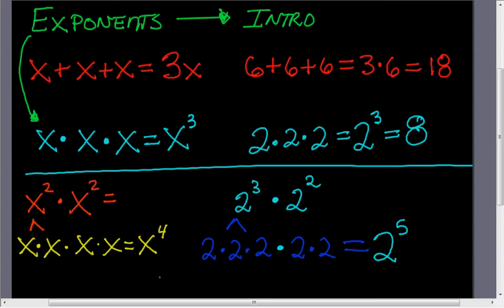And some of you might have seen there might be a shortcut. Looking at these, x to the two times x to the two, or two to the three times two to the power of two. Is there a short way I could have gotten x to the power of four and two to the power of five? In fact, there is. The shortcut here is when multiplying common bases, you can just add the exponents.